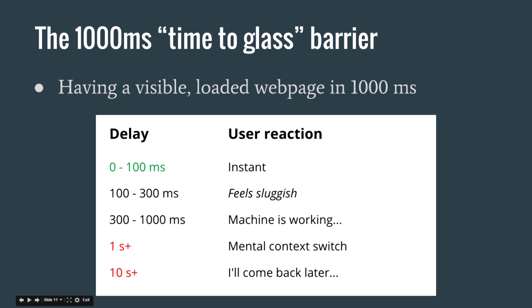By glass, I mean the device the user is using. We want to be able to serve stuff in 1,000 milliseconds. And that doesn't only include the time to first byte — that includes everything. We want the site to be ready. So WordPress has to respond faster than 1,000 milliseconds so we can meet that barrier.